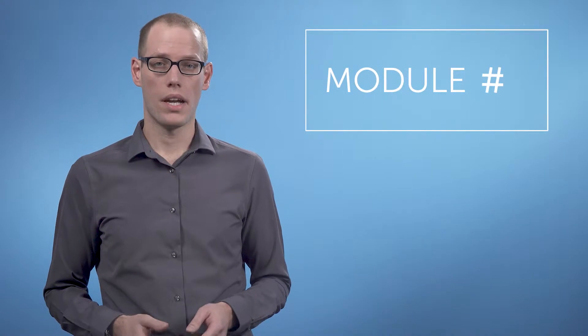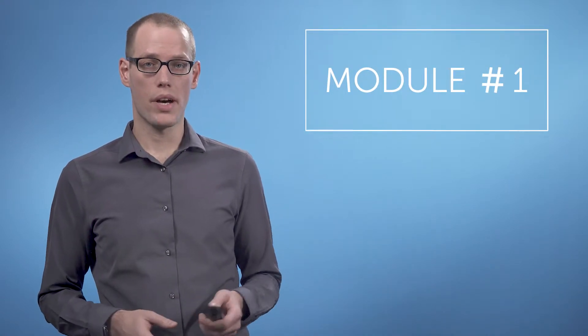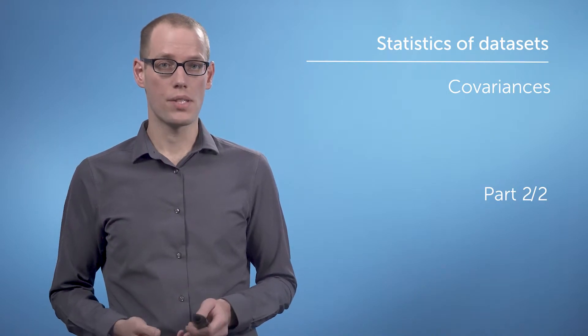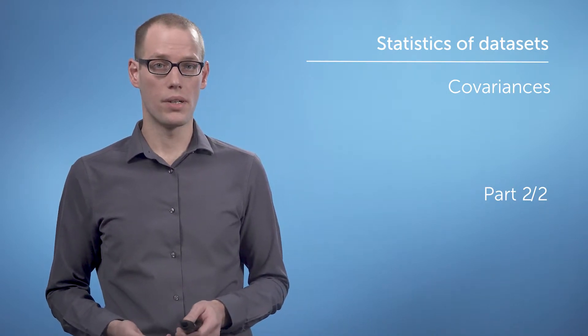In the last video, we looked at variances for one-dimensional datasets, and in this video, we're looking at variances for high-dimensional datasets. The intuition and definition of variance we had earlier does not work in the same way in high dimensions, and squaring vectors is not really defined.